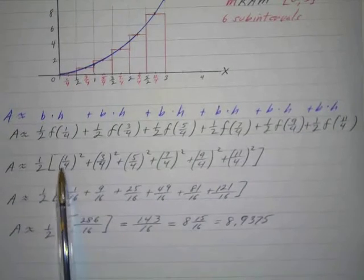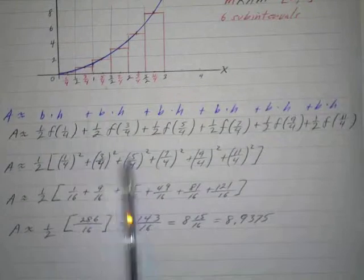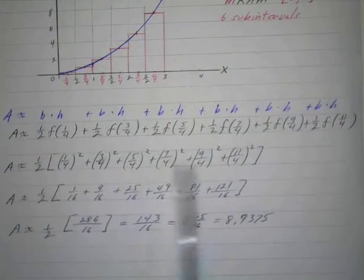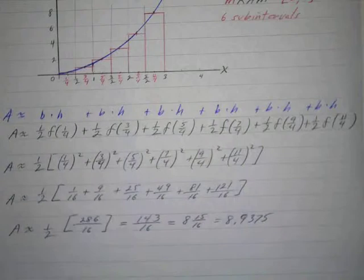We've got one-fourth squared, three-fourths squared, five-fourths squared, seven-fourths squared, nine-fourths squared, eleven-fourths squared. So that's going to be the height of these rectangles.